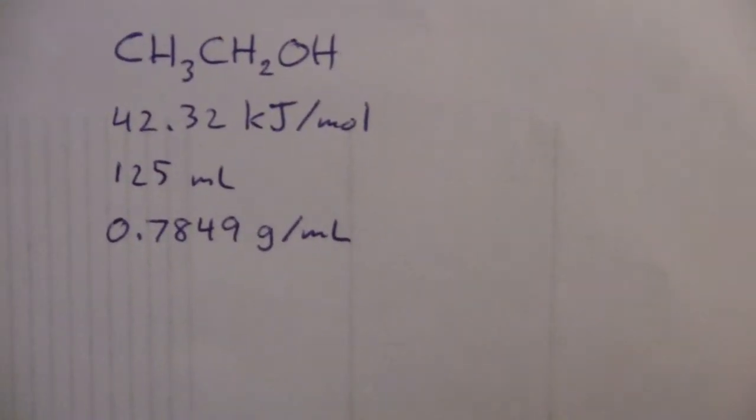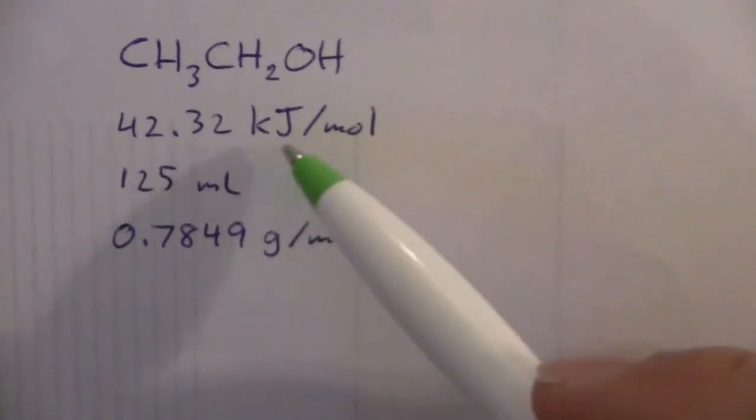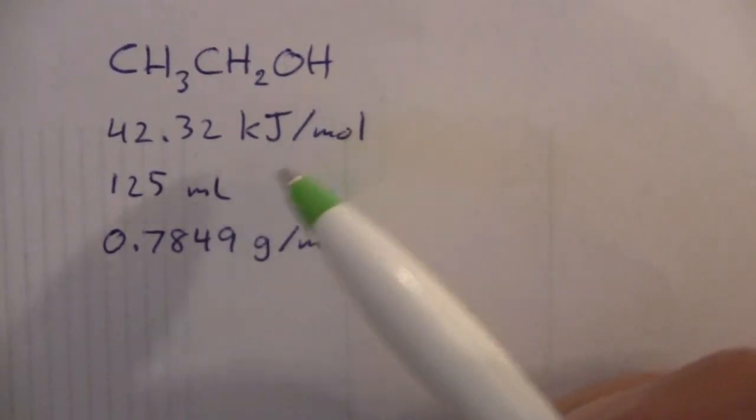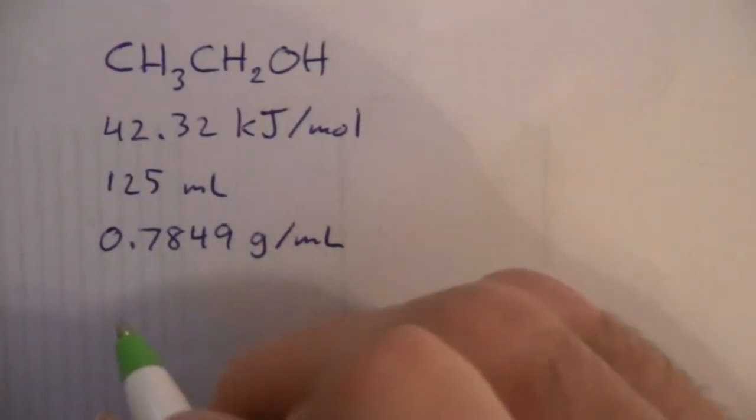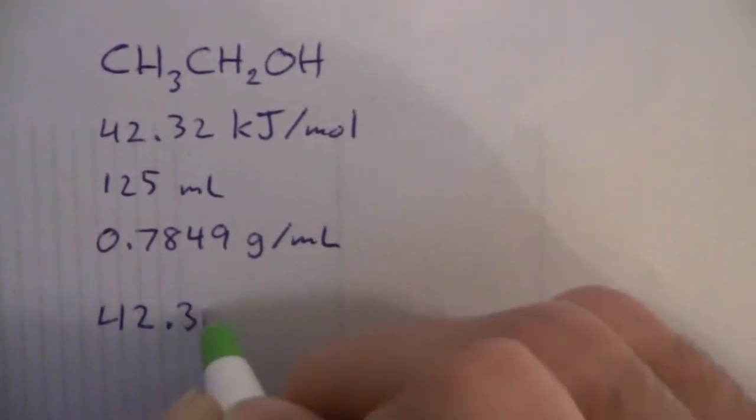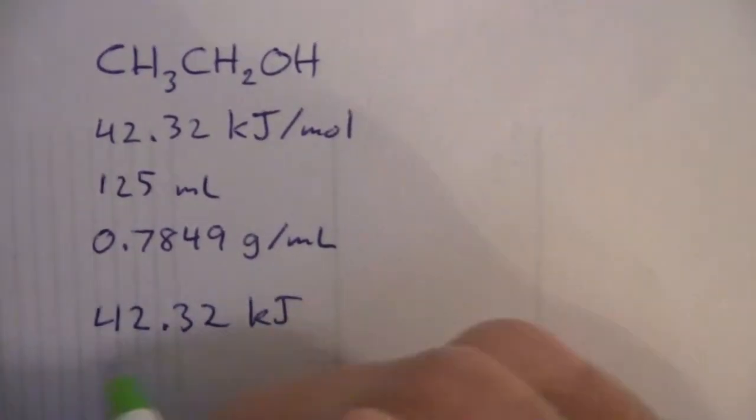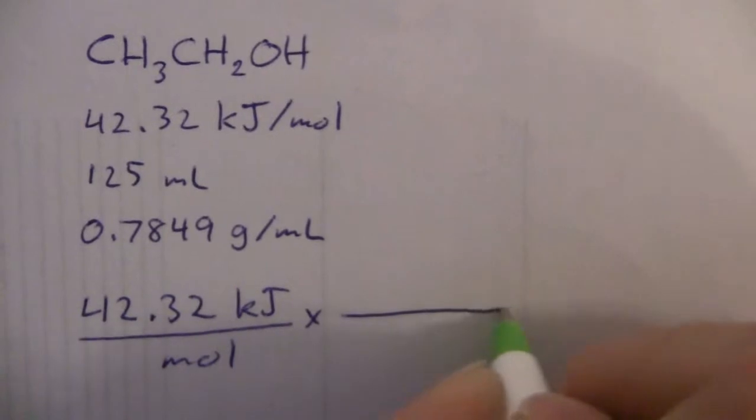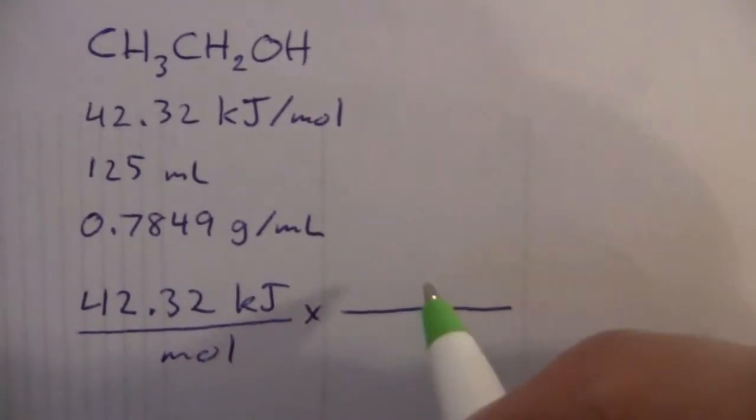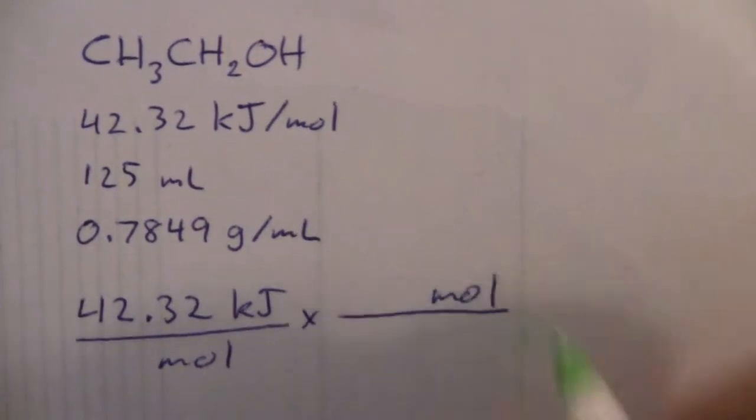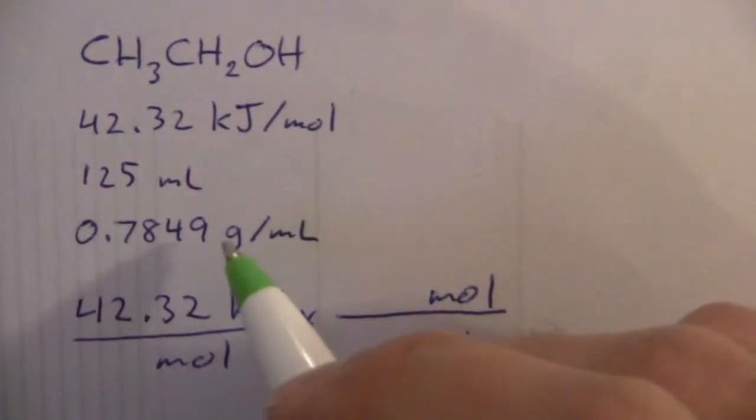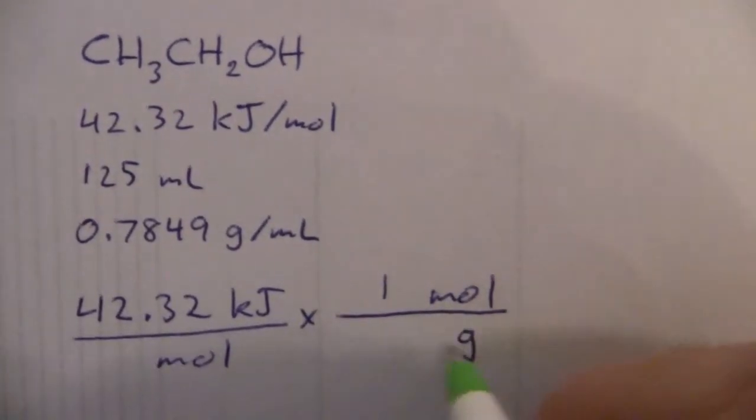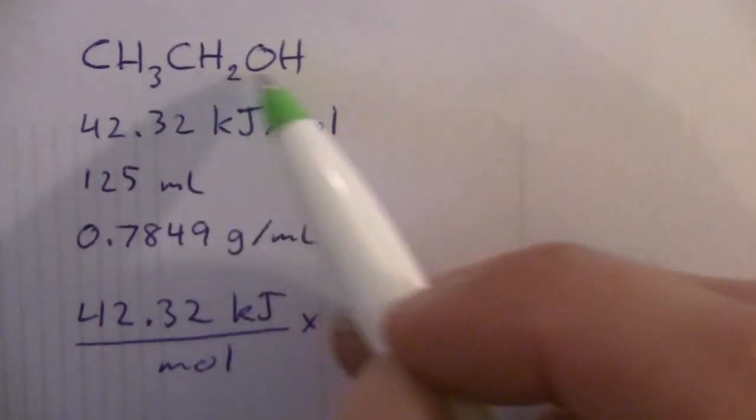We know we are looking for kilojoules, energy in the end. So we can start with that and then work our way backward to cancel out those moles. Let's start with 42.32 kilojoules per mole. Now we're going to work back to cancel the moles. I need moles here, and this will be my molar mass to get this to grams. So how many grams per mole? That comes from the formula.